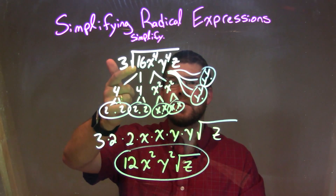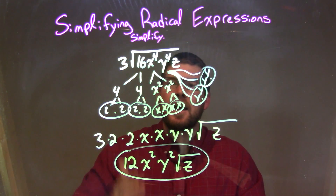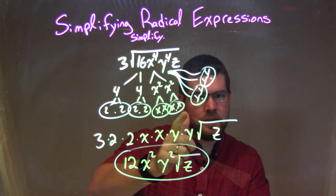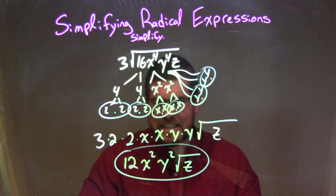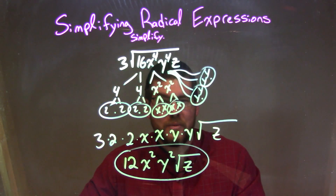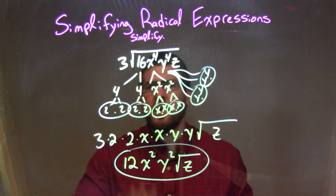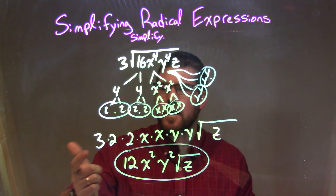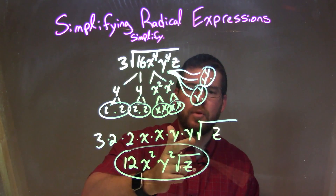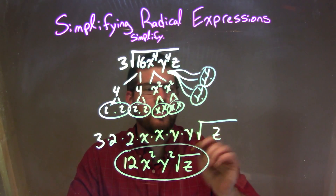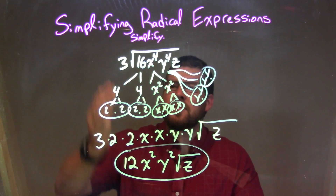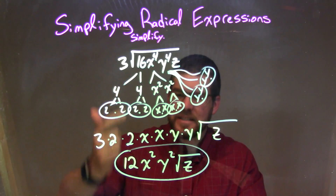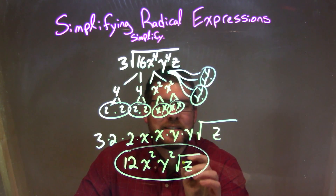Let's recap. We were given 3 times the square root of 16x to the 4th, y to the 4th, times z. We broke it down into a prime factorization: 2 times 2 times 2 times 2 times x times x times x times x times y times y times y times y times z. From there, we circled all of our pairs, which was most except for that little z — don't forget it. We put our pairs as singles on the outside of the square root: 3 times 2 times 2 times x times x times y times y, with z left inside the square root. Simplified, our final answer is 12x squared y squared times the square root of z.